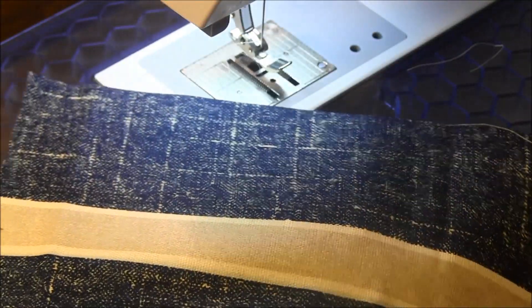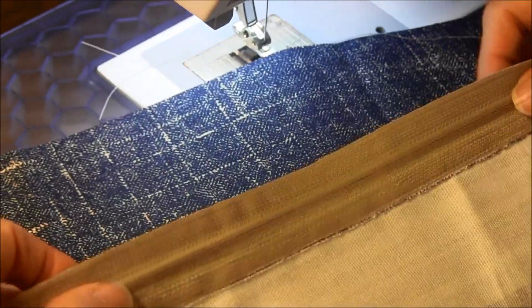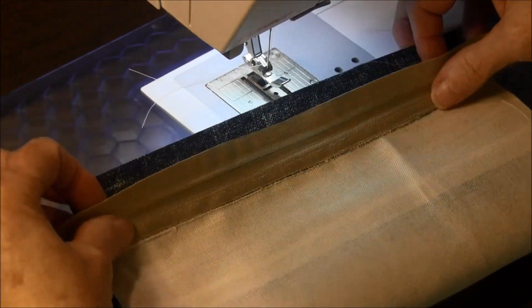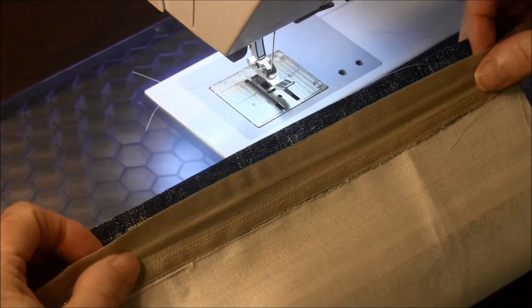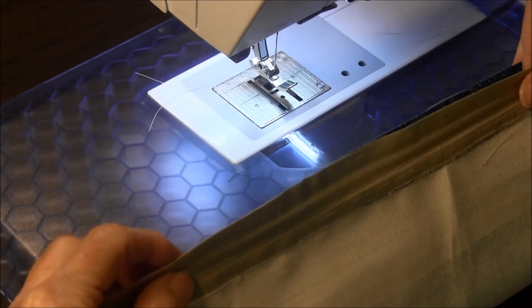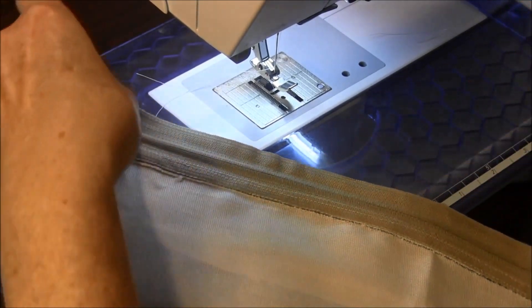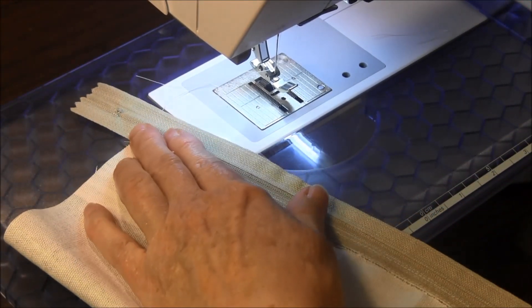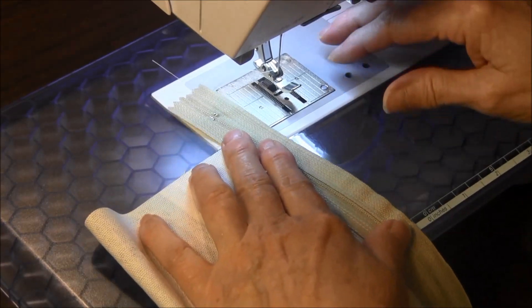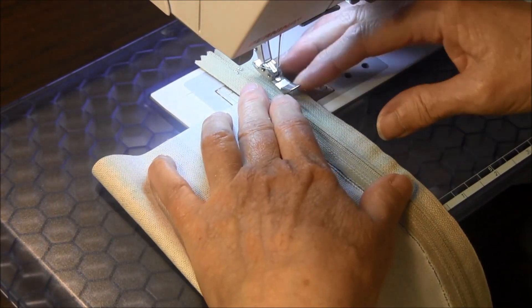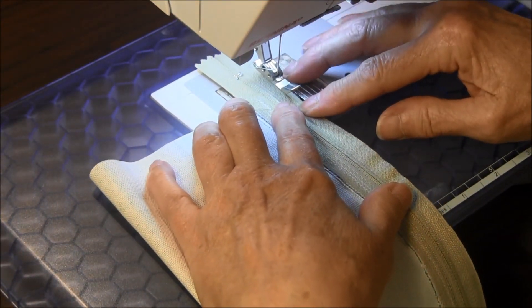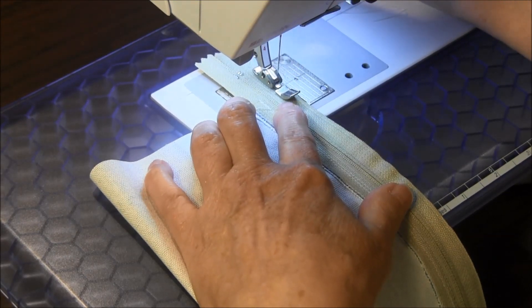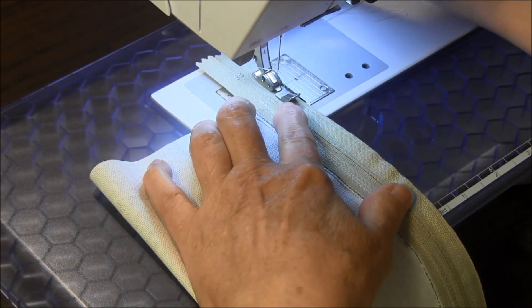Now we're going to do the other side. Align your zipper up on the other side and again, this time I'm not going to pin. Then we're going to stitch again close to the zipper teeth.